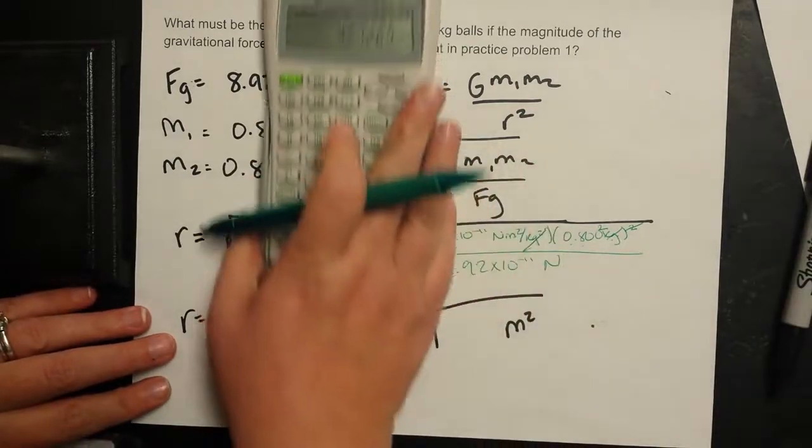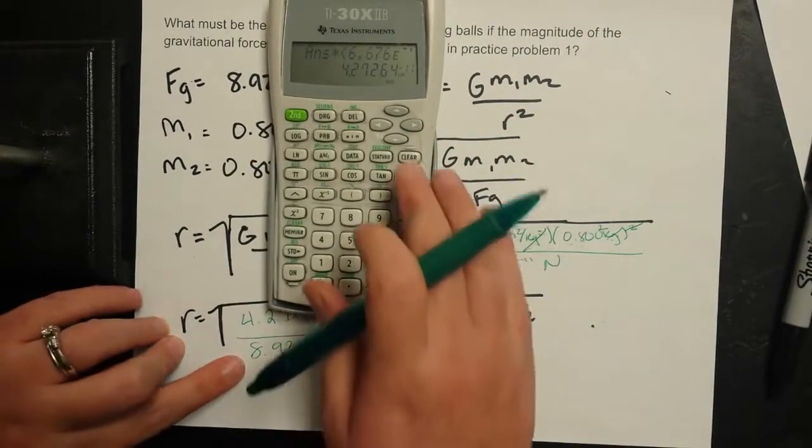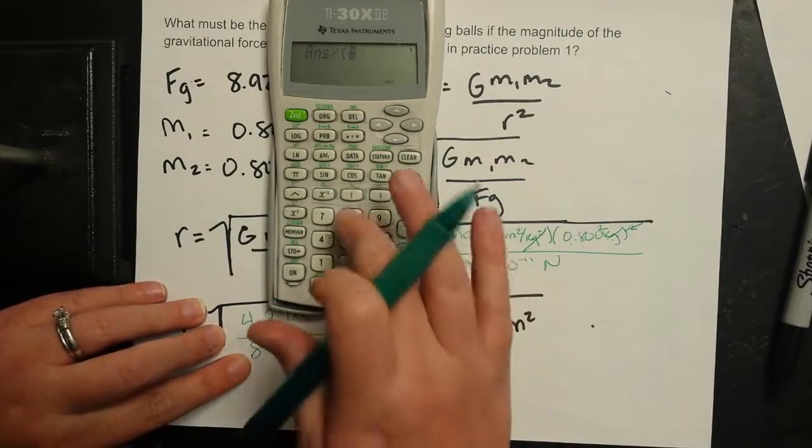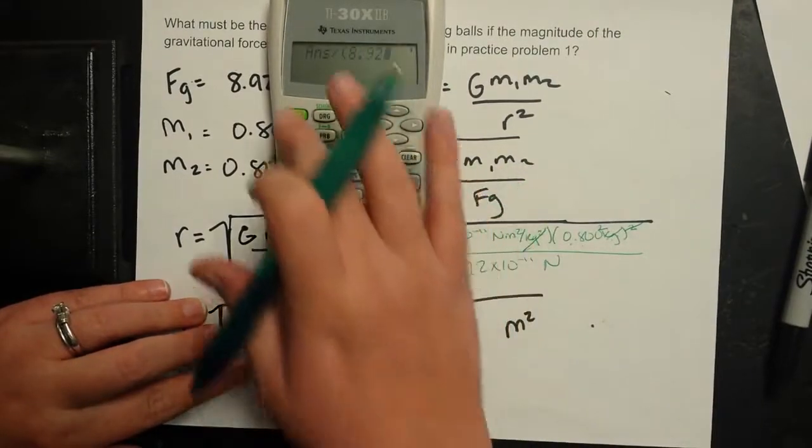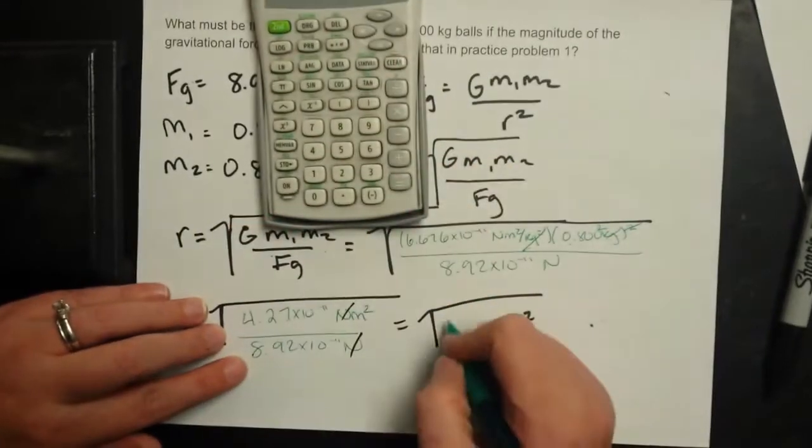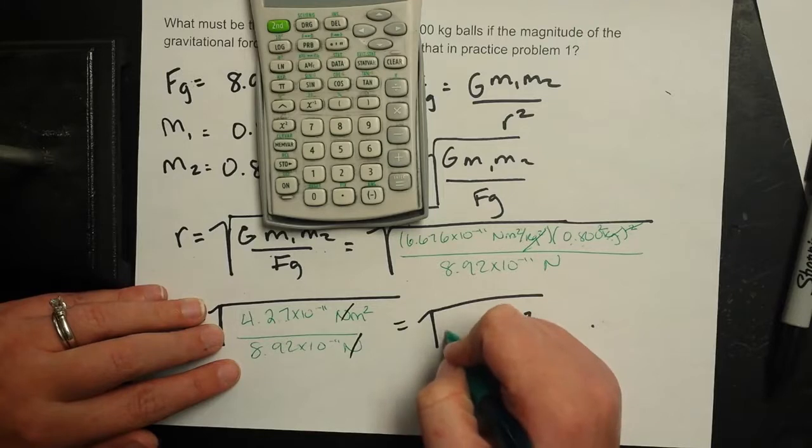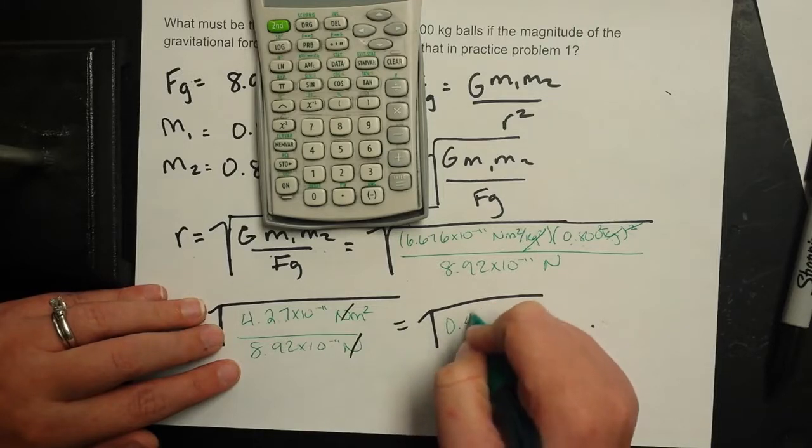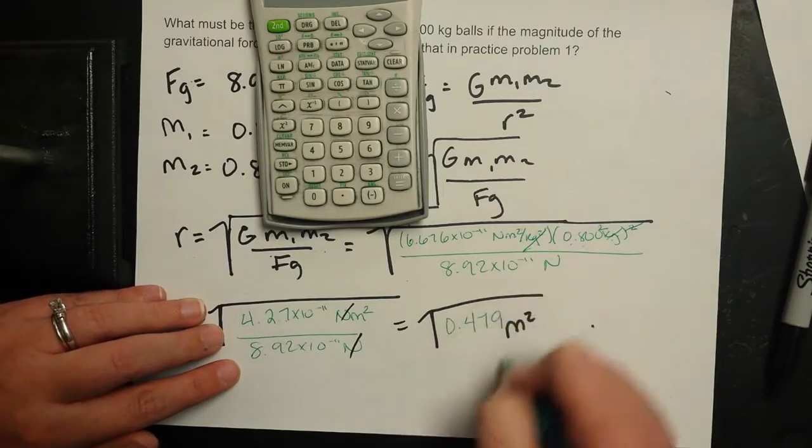I've got 4.27 times 10 to the negative 11th in my numerator divided by 8.92 times 10 to the negative 11th. Here we get 0.479 meters squared.